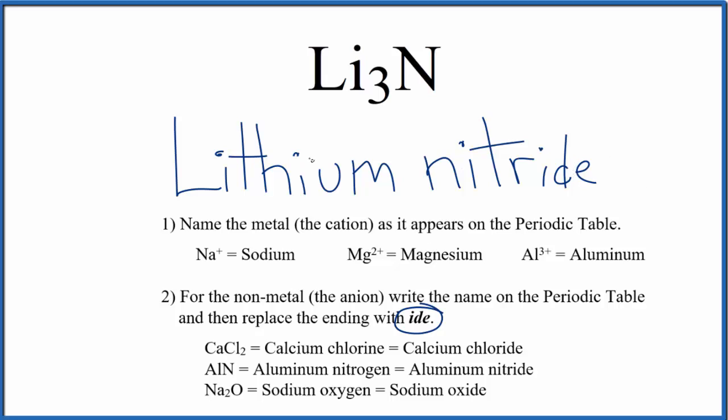If you were given the name and asked to write the formula, lithium forms ions that are one plus. The nitride ion is three minus. So you can see we need three times the one plus to balance out this three minus.